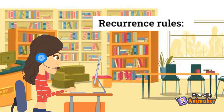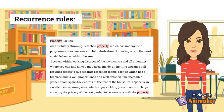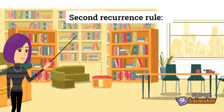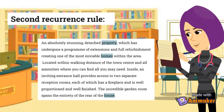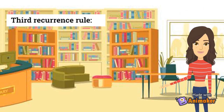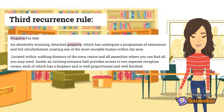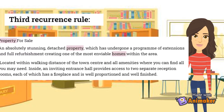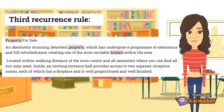Moreover, we are going to exemplify three different recurrence rules. Repetition means that an element reappears in the same form in different places of the text — "property" is a noun that is constantly repeated throughout this text. The second recurrence rule is lexical substitution, which means that an element is expressed with synonyms, hypernyms, or hyponyms. In this case, the noun "property" is replaced by the synonyms "home" and "house." One more recurrence rule is elision, which is about the elimination of subjects that have been previously mentioned. The subject "property" has been mentioned in the title and in the first paragraph, and then it is described without being stated again — the subject is implied, so there has been an elision of the subject to avoid redundancy.